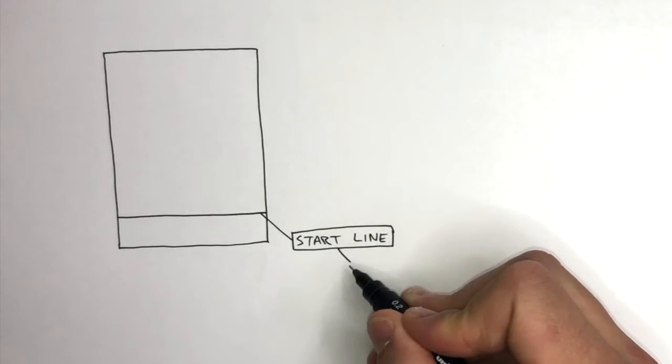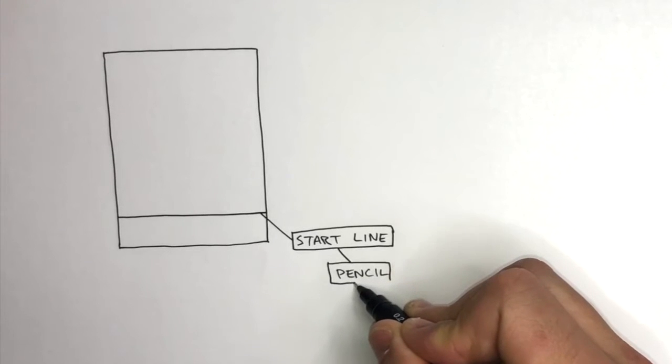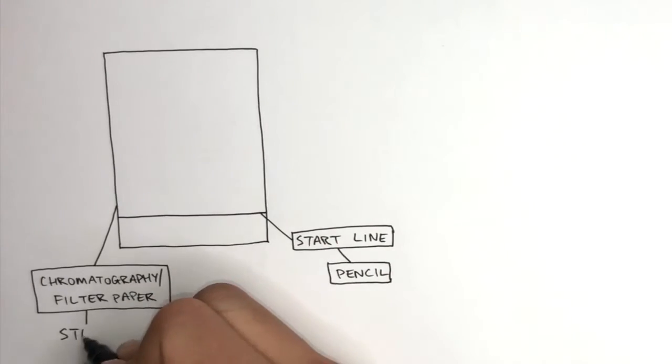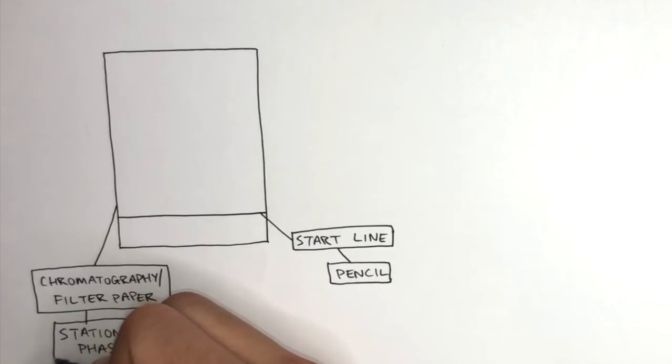The start line is drawn in pencil. The pencil is insoluble and does not dissolve in the solvent. The chromatography or filter paper is the stationary phase. This is the phase that does not move. It is stationary.